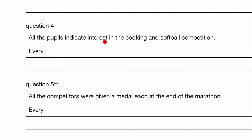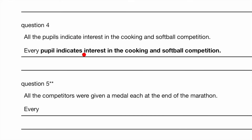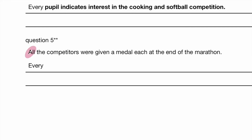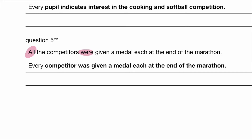All the pupils indicate interest in the cooking and softball competition — all is plural, therefore 'indicates' is plural with no S. Now using the singular form: every pupil indicates with S. Why? Every is singular. All the competitors — plural — therefore 'were' is plural and in the past tense. Every competitor — not every competitors — every competitor was given a medal at the end of the marathon. Correction: we shouldn't use 'each' at the end because 'every competitor' already has that meaning. The answer is: every competitor was given a medal at the end of the marathon.